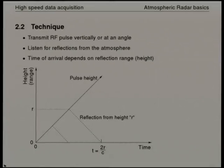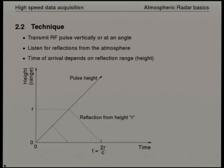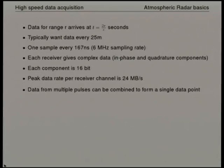The radars use various techniques for determining atmospheric parameters. The most easily visualised is the Doppler system, which works in the same way as the Doppler effect when you drive past sirens. We send a pulse up into the atmosphere and listen for reflections, and we can tell the height the reflection came from by how long it took. There's an extra factor of two in the radar equation because the signal travels both up and down before we receive it.